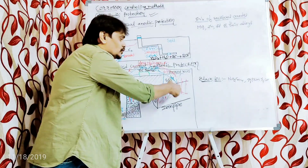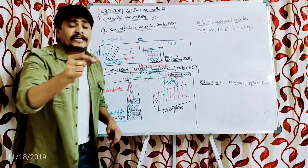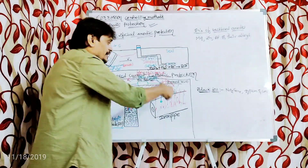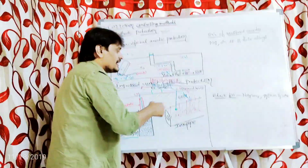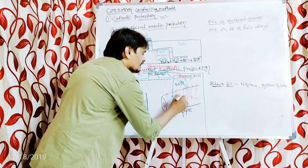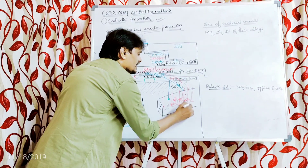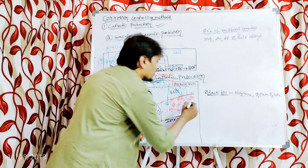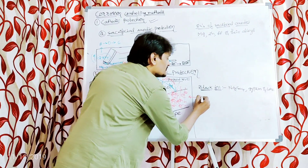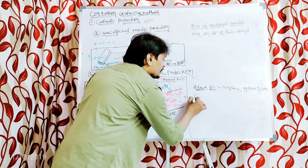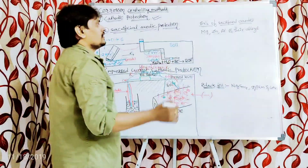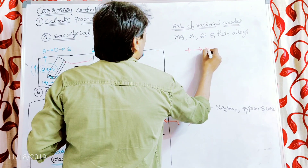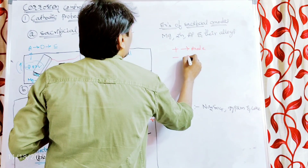The iron pipeline, which is the base metal, is becoming enriched with electrons. Since electrons carry a negative charge, the iron pipeline becomes enriched with negatively charged particles. As you have studied since childhood: a positive electrode is an anode and a negative electrode is a cathode.